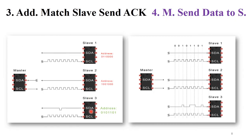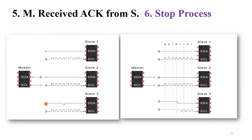When the address matches, slave three sends an acknowledgement signal to the master, indicating it is ready to receive data. After receiving the acknowledgement, the master sends data to slave three in data frames — for example, in the format 0 1 0. After receiving the data from the master, slave three again sends an acknowledgement signal back to the master, confirming the data has been completely received.